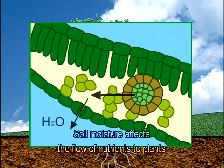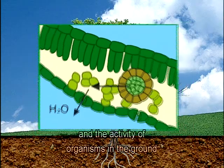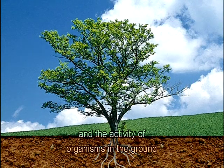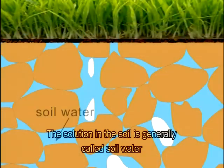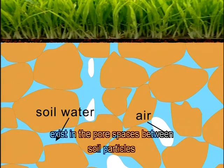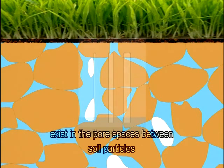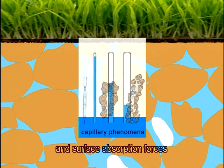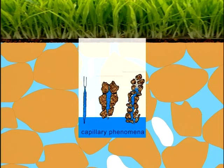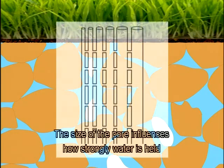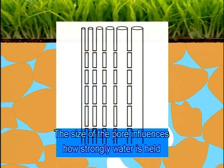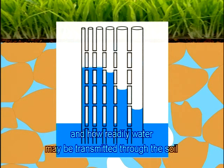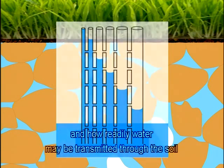Soil moisture affects the flow of nutrients to plants and the activity of organisms in the ground. The solution in the soil is generally called soil water. Soil water and gases exist in the pore spaces between soil particles. Water is held in the soil by capillary and surface absorption forces. The size of the pore influences how strongly water is held and how readily water may be transmitted through the soil.